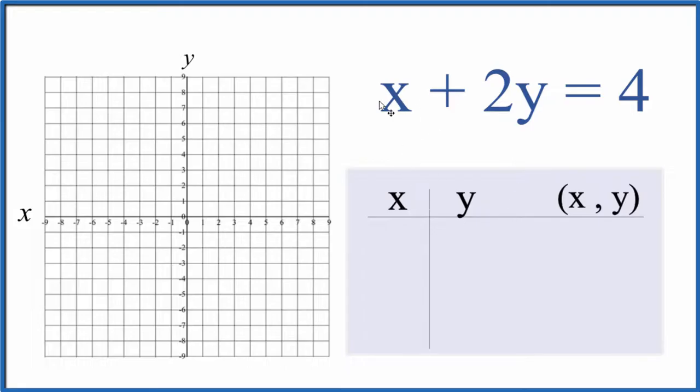So we'll put a value in for x, and then we'll figure out the value for y, and then we can graph the equation x plus 2y equals 4. So let's start out with 0. That's always good. If x is 0, we have 2y equals 4. Divide both sides by 2. We have y equals 4 over 2, and that's just 2.